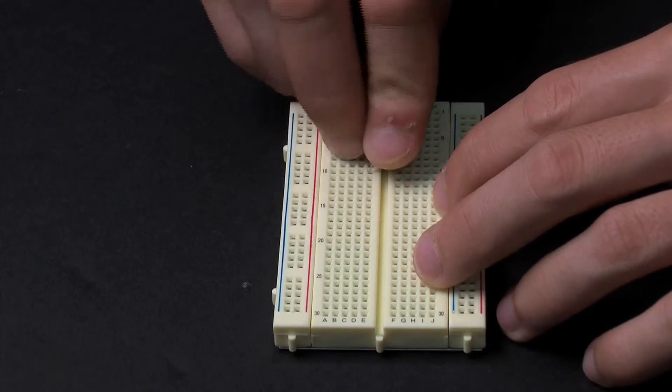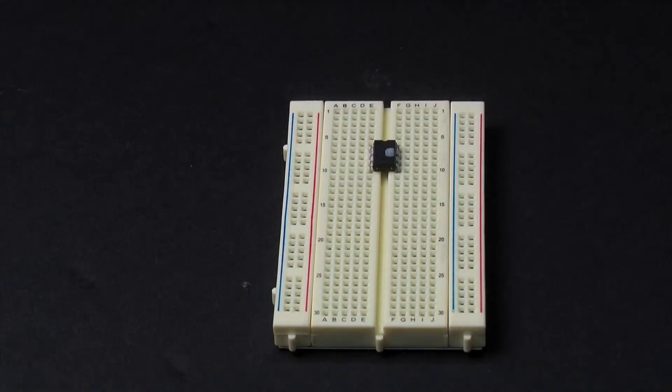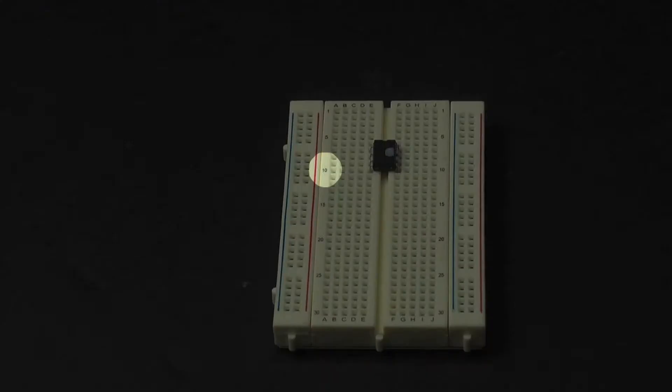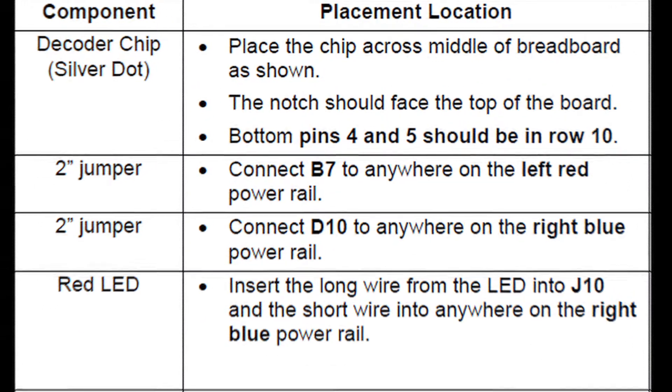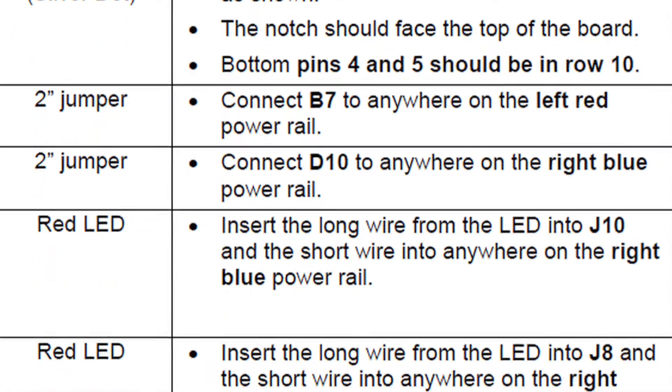Begin building the receiver by inserting the decoder chip as a class. Place the chip across the middle of the breadboard. The notch on the chip should face the top of the breadboard. Bottom pins four and five should be in row ten. Instructions for this and for the rest of the wiring are provided in the youth handout. The following video shows the rest of the circuit being built.